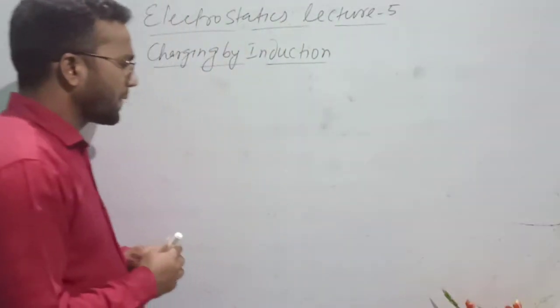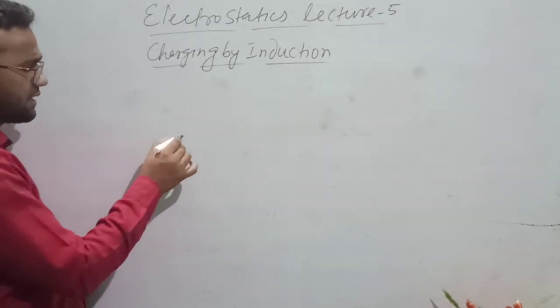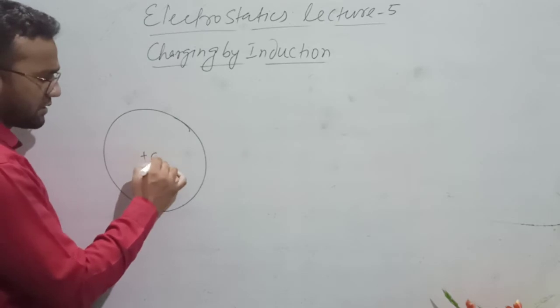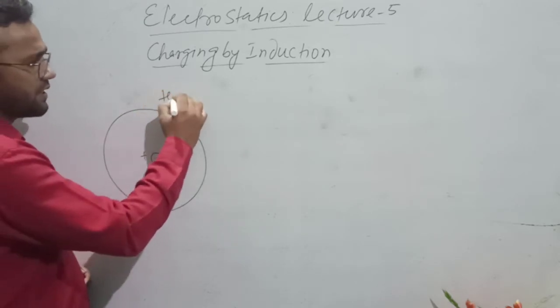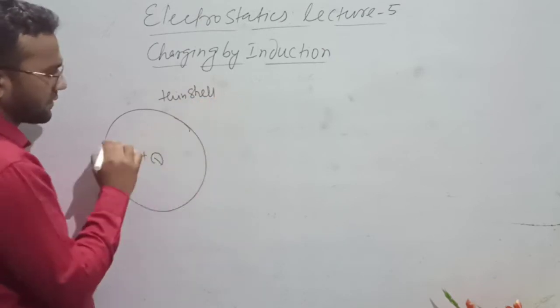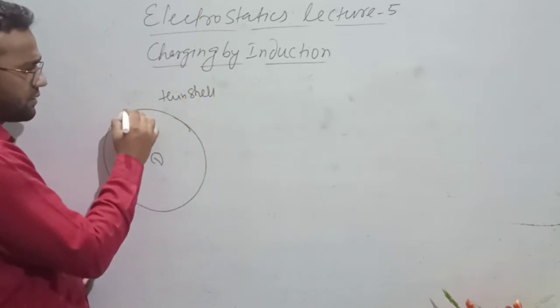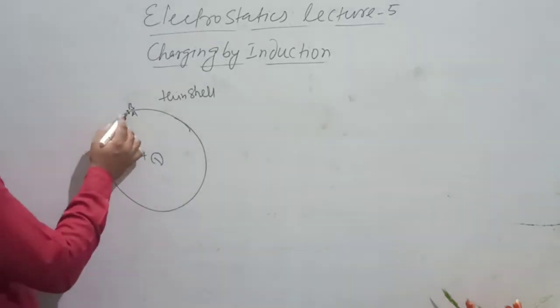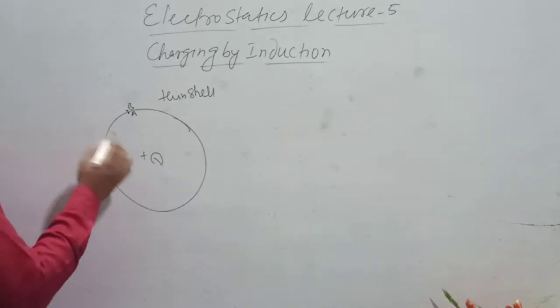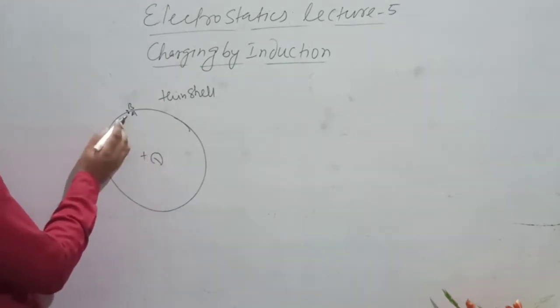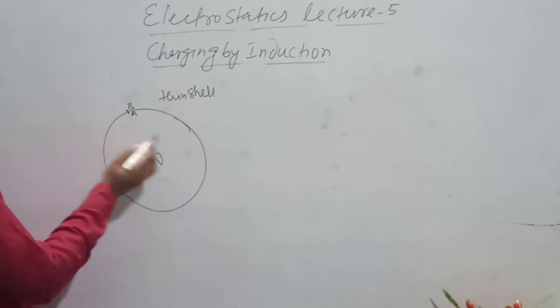Now, if we have a charge here, a plus Q charge on a spherical shell. If we have points A and B on this shell, we can see what charge will be on A and B. This charge is positive.